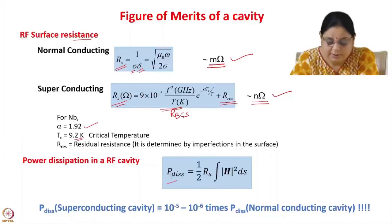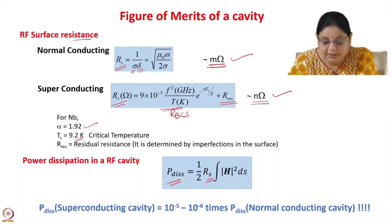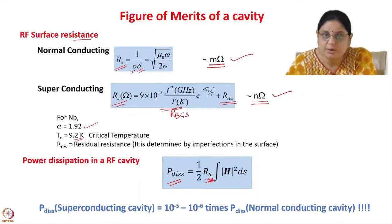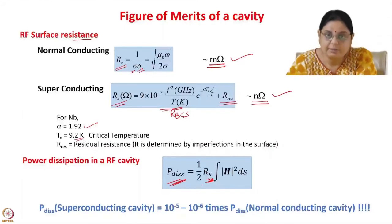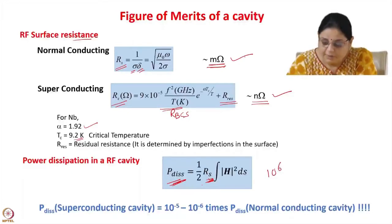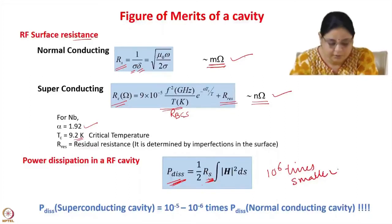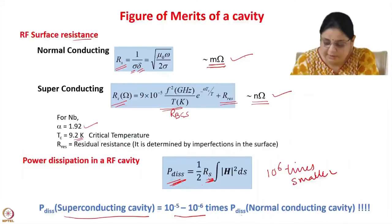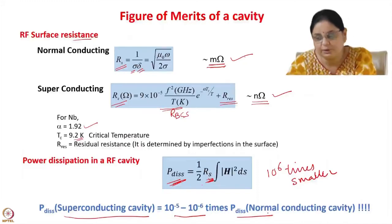The RF surface resistance of normal conducting cavities is in the range of milliohms, whereas for superconducting cavities it is in the range of nanoohms — 10⁶ times lower. Since power dissipated in the cavity equals ½ R_S × ∫H² dS, and R_S is very small in a superconducting cavity, the power dissipated will be 10⁻⁵ to 10⁻⁶ times the power dissipated in a normal cavity.